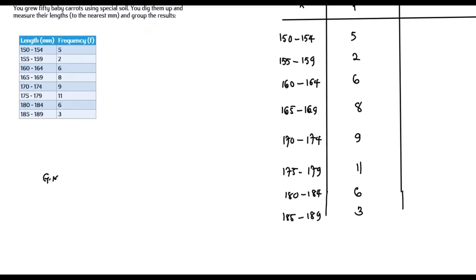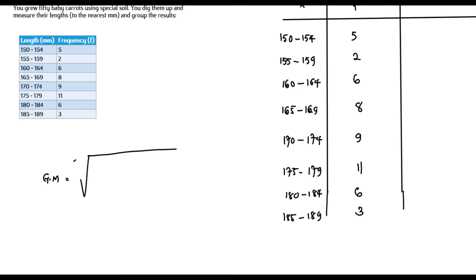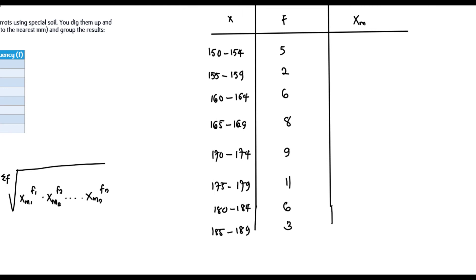The formula is: GM = the (Σf)th root of xm1^f1 × xm2^f2 × ... × xmn^fn, where xm denotes the midclass value. The midclass is the average of the lower and upper class boundaries. For 150–154, the midclass is (150 + 154) / 2 = 152. For 155–159, it is (155 + 159) / 2 = 157. We calculate midclass values for all classes in the same way.